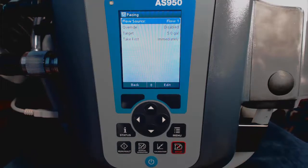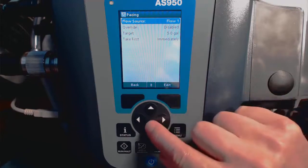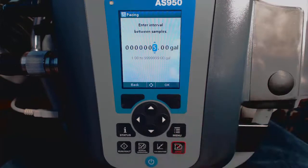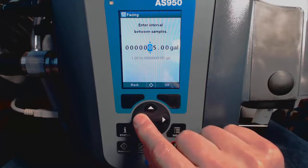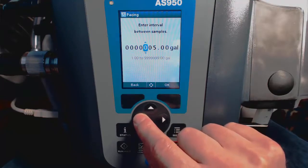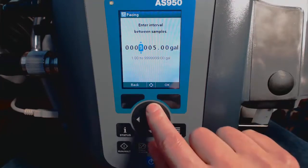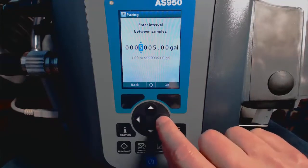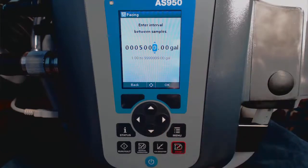Now we'll need to select our target volume. In other words, how many gallons will pass before we collect a sample. So scroll down to Target, and enter the number of gallons we want to use as our target volume. In this case, I will use 5,000 gallons. What this means is that every 5,000 gallons that is measured by the AV9000 Submerged Pressure Area Velocity Sensor, a sample will be collected.